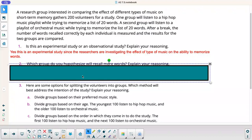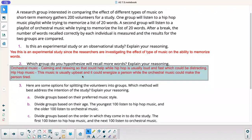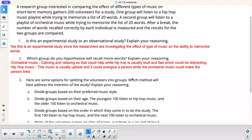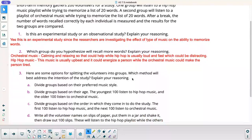Which group do you hypothesize will recall more words? Explain your reasoning. There's really, I mean, it's just kind of a wild guess here, but I just wrote a couple possible scenarios. I have no idea. There might not be any logical reason. They might not have one group more than the other. But I just put, for orchestral music, you might say, because it's calming and relaxing, that could help, while hip hop is usually loud and fast, which could be distracting. So maybe the orchestral music might relax the person. Now, on the other hand, if you want to say hip hop, you could say this sound is usually upbeat and it could energize a person while the orchestral music could make the person tired. These are just possible situations.